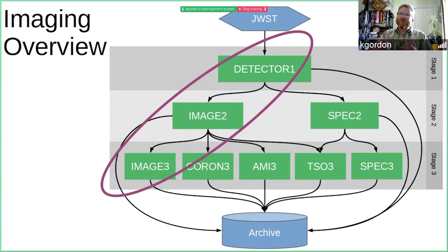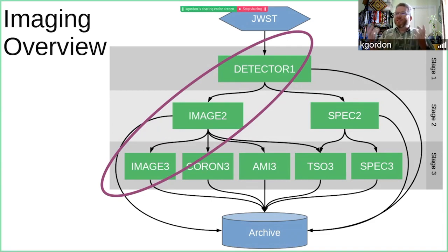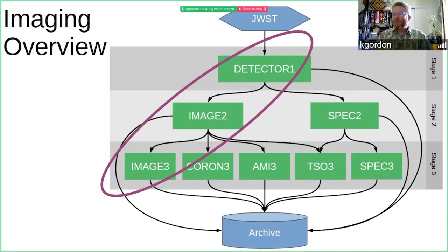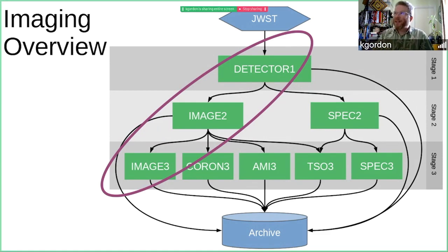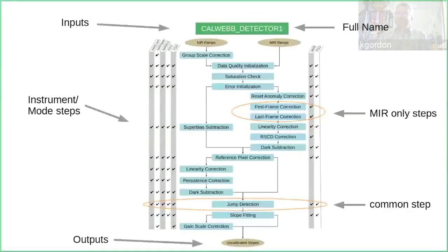One thing that's different about the JWST pipeline compared to many previous observatories is that there are no instrument names involved at this stage. Because four — actually five — instruments are coming online at once, and they have a lot of overlapping similar observation modes, it made more sense to organize by the type of observation rather than by instrument. We were actually able to save quite a lot of development effort and cross-fertilize ideas and algorithms between instrument teams.